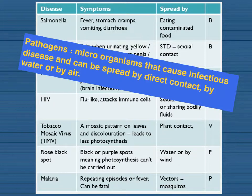A popular question that examiners will ask is: what is a pathogen? You need to mention that it is a microorganism that causes infectious disease — such as bacteria, viruses, fungi or protists — and can be spread by direct contact, by water or by air. When you think about these diseases, you also need to know how they are spread. For example, salmonella is spread by direct contact from eating contaminated food, and rose black spot is a fungus that is spread by the wind.